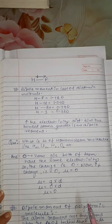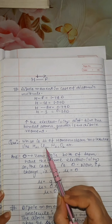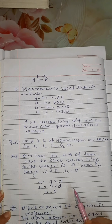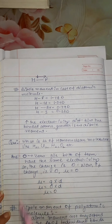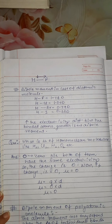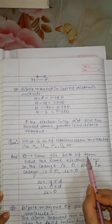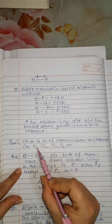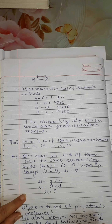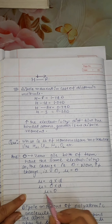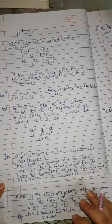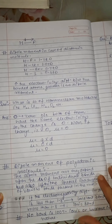Let's do one question: what is the dipole moment of homonuclear molecules like hydrogen, chlorine, nitrogen, oxygen, etc.? Homo means same. The answer is zero. The dipole moment will be zero because both atoms have the same electronegativity. Due to the same electronegativity, the charge will be zero, and therefore the dipole moment will also be zero.